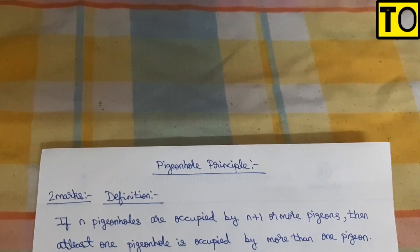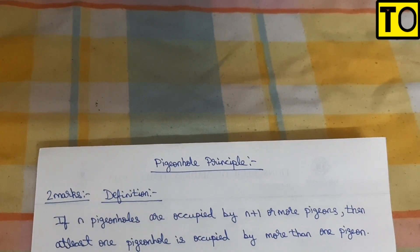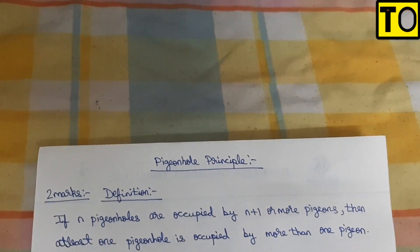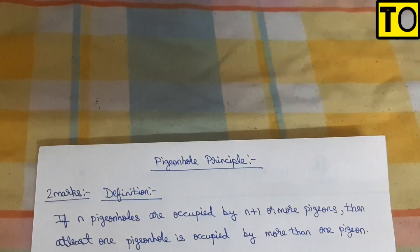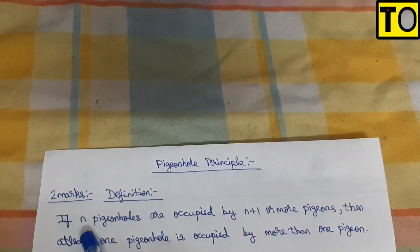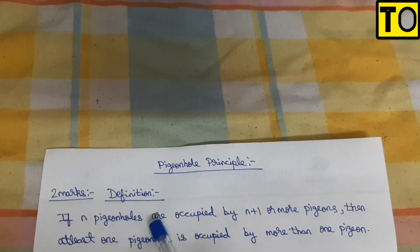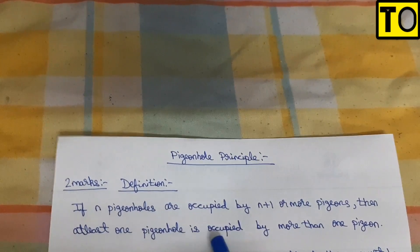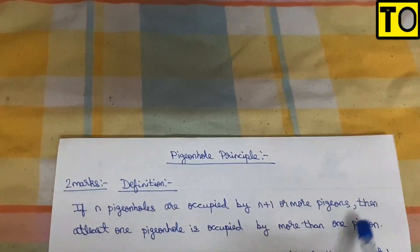First, let's talk about the Pigeon Hole Principle. If you define the Pigeon Hole Principle: if n pigeon holes are occupied by n plus 1 or more pigeons, then at least one pigeon hole is occupied by more than one pigeon.